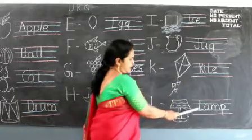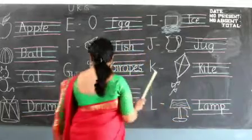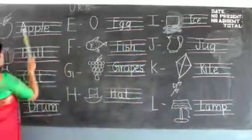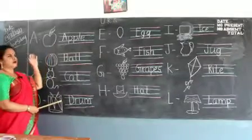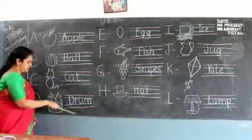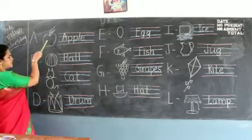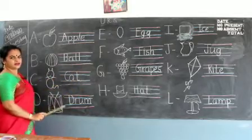L for Lamp. L, A, M, P, Lamp. So you all are going to revise this. And you all are going to learn how to write. And I want you all to learn this. And I want you all to try to draw these pictures also. Okay children. Thank you.